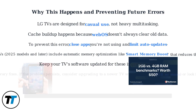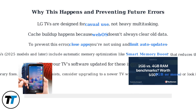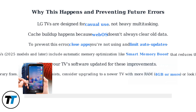While clearing cache and power cycling are effective, they're temporary fixes. If the problem persists, consider upgrading to a newer TV with more RAM — 4GB or more — or look into cloud-based app offloading features if available on your model.